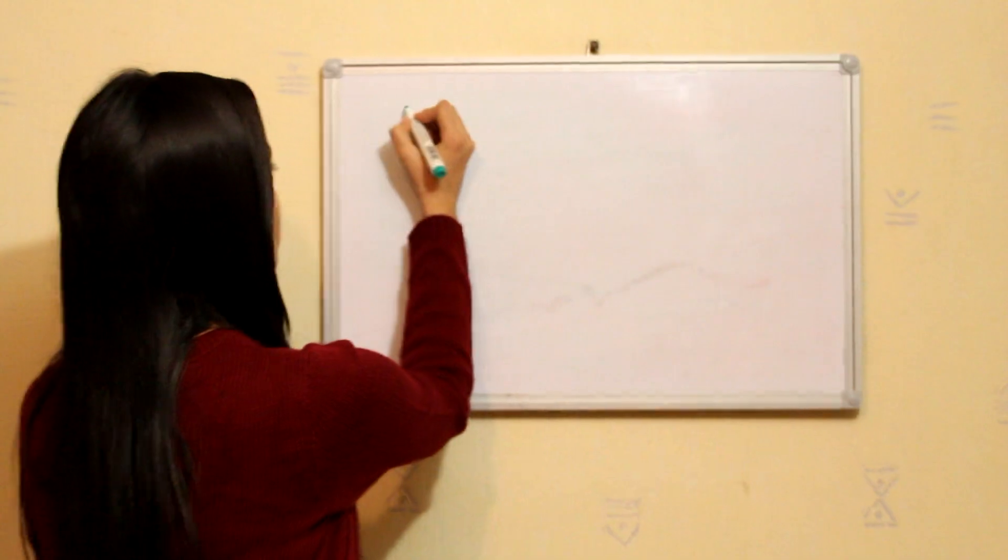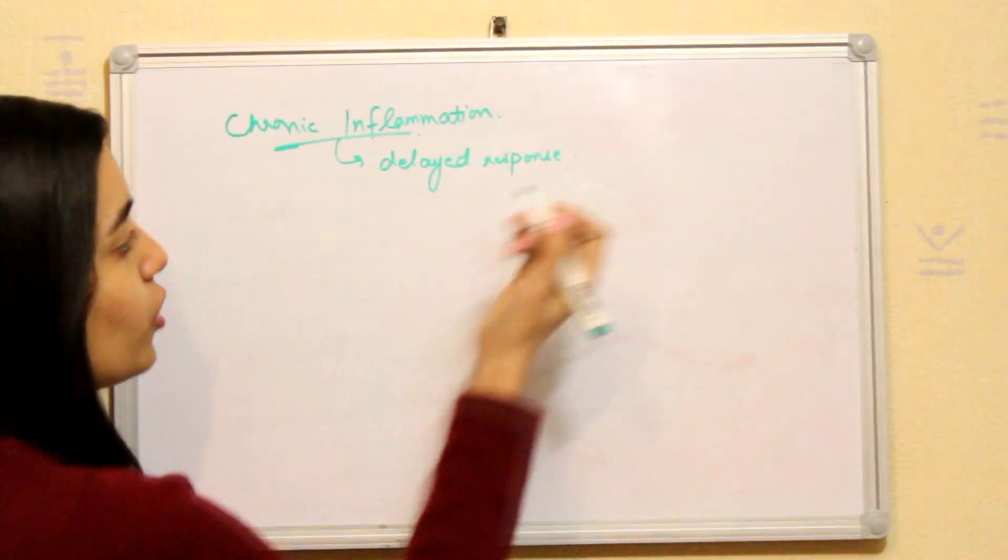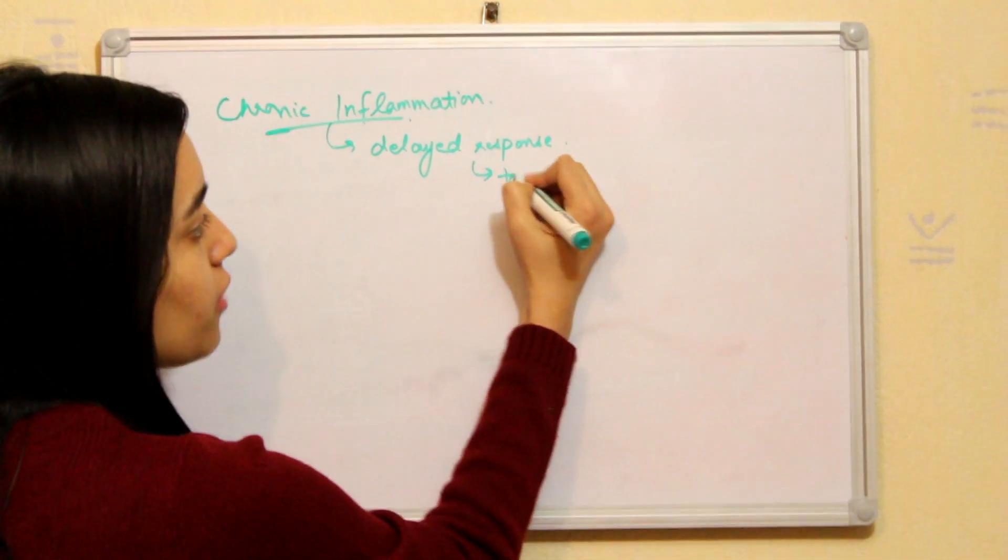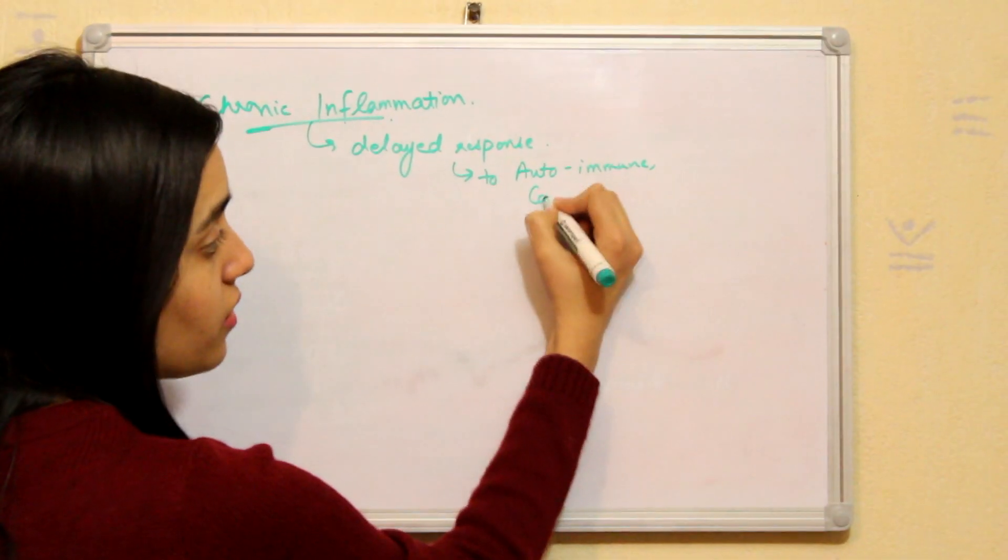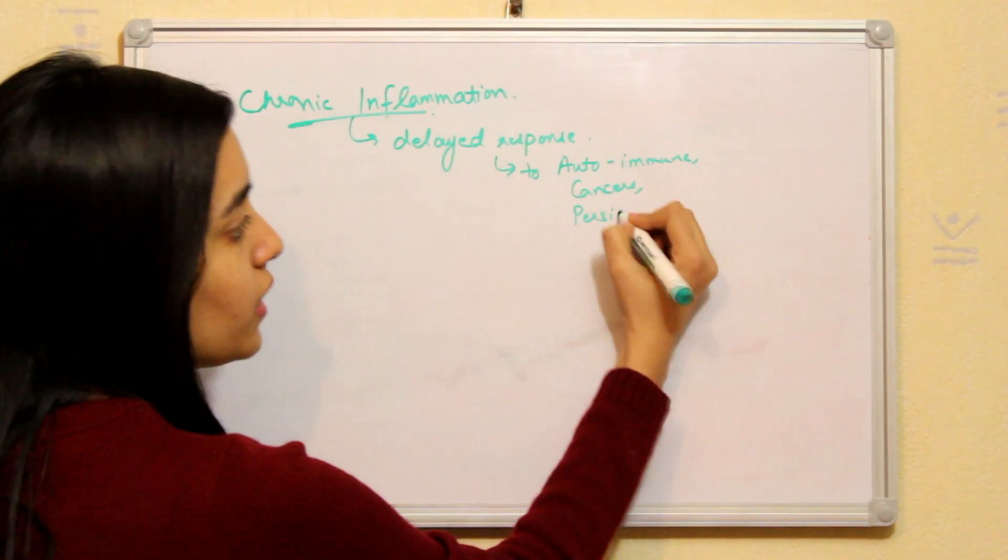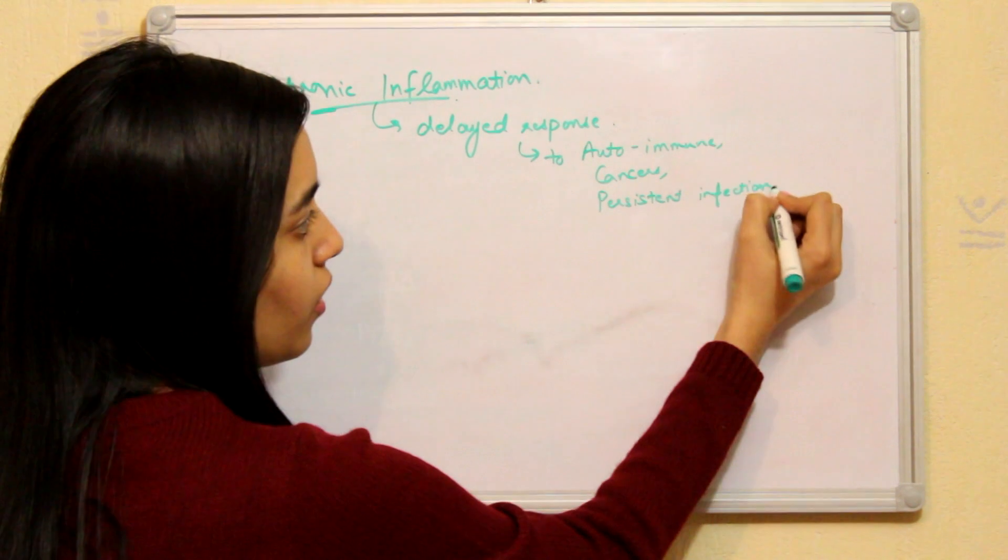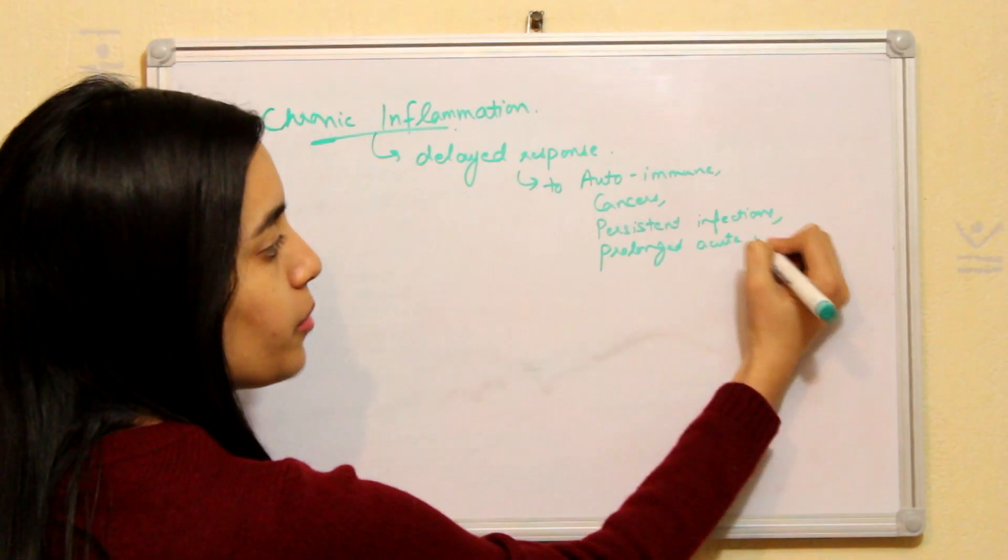Now what is chronic inflammation? Chronic inflammation is the delayed response. It can be anything like autoimmune disorders, cancers, persistent infections, or it can be due to prolonged acute inflammation.